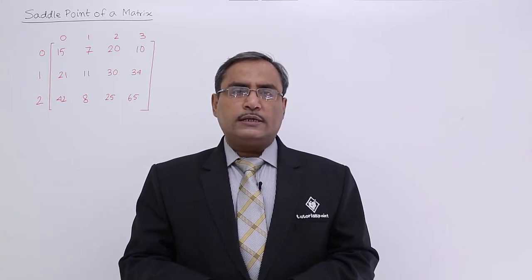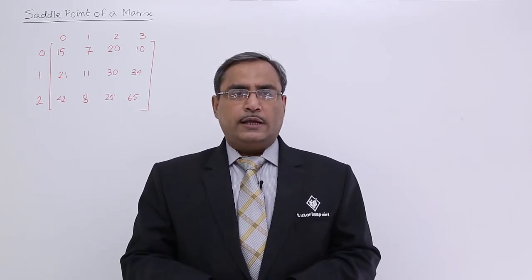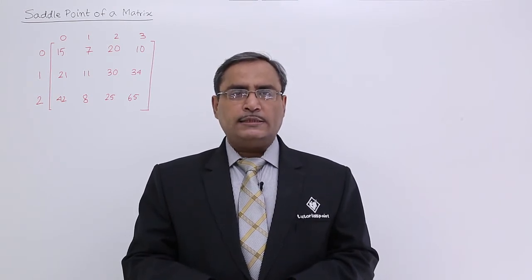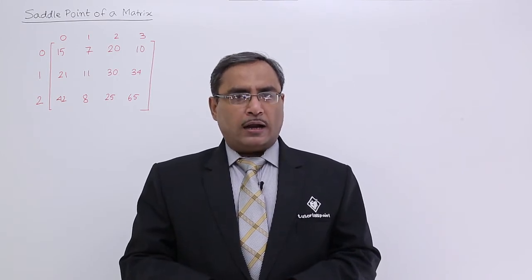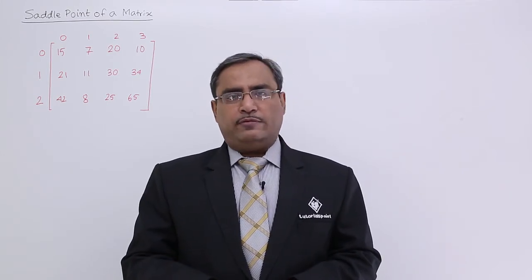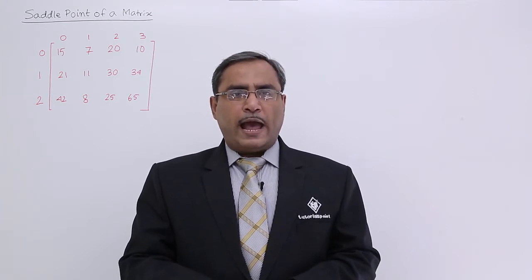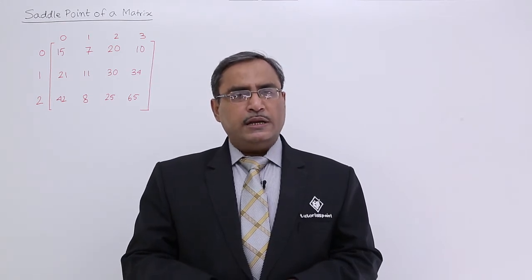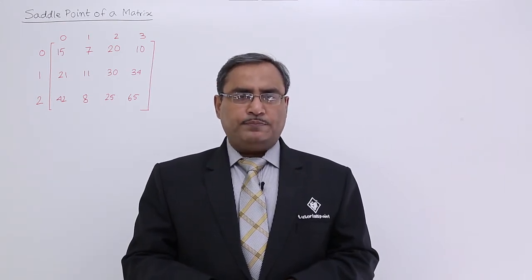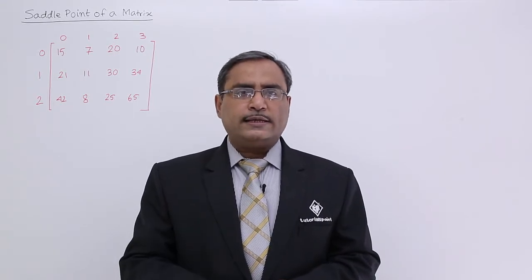In this session, we are going to discuss the saddle point of a given matrix. A saddle point means: suppose there is a particular number positioned at row R and column C in a matrix, and if that number is maximum across row R and at the same time minimum across column C, or vice versa, then that number is known as a saddle point number.